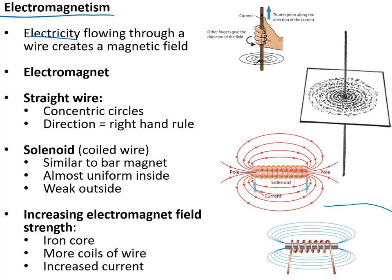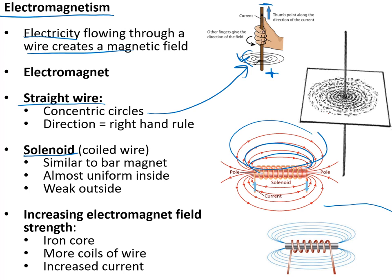Electromagnetism is the idea that when electricity flows through a wire it creates a magnetic field. In a straight wire that field is made of concentric circles, and the direction is found using the right-hand rule: point the thumb of your right hand from positive to negative and your fingers curl in the direction of the magnetic field. A solenoid is a coiled wire with current running through it, creating a magnetic field similar to a bar magnet — stronger inside the coil than outside. You can increase the field strength by adding an iron core, adding more coils, or increasing the current.